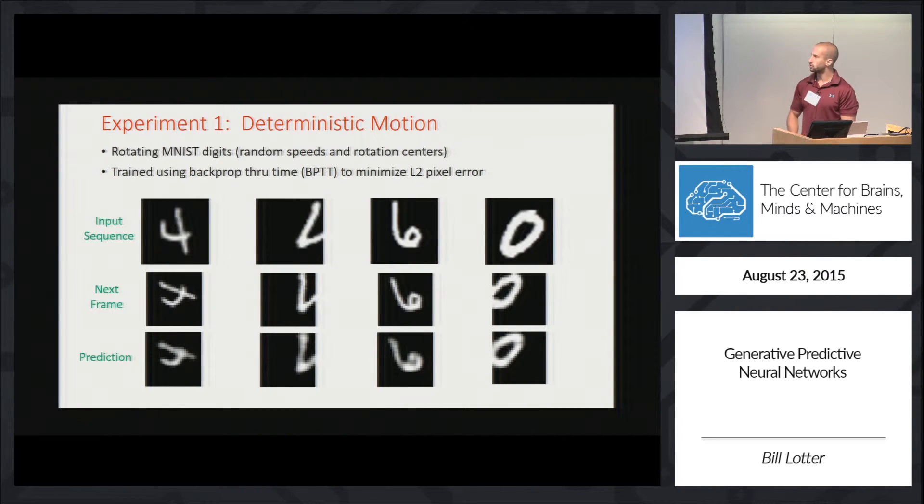For our first experiment, I've been working with rotating MNIST digits. These digits rotate with a random speed and random center, and I train the network using backprop through time to minimize the L2 pixel error. The networks do pretty well - the predictions match up decently with the actual next frame. We can actually treat the predicted frame as an actual frame and feed it into the model, doing this recursively to generate a predicted sequence.